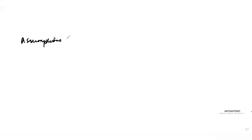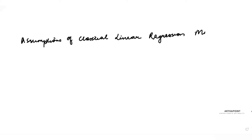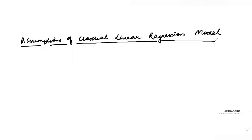Assumptions of Classical Linear Regression Model. In order to go through the classical linear regression model and see what are the properties that my betas hold, when are my betas BLUE, and also to understand what happens when the assumptions are violated, we first have to go ahead and understand these various assumptions.